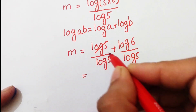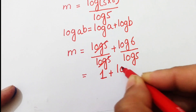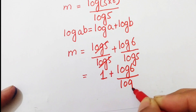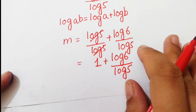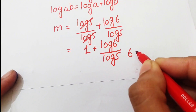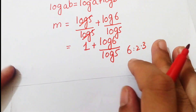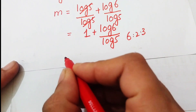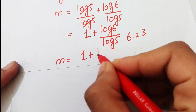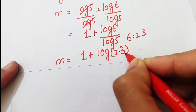These terms cancel each other, and we can write 1 plus log6 over log5. Now we know that 6 equals 2 times 3, so we write 6 as 2×3, and this becomes m equals 1 plus log(2×3) over log5.